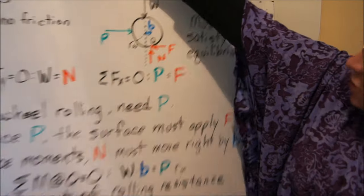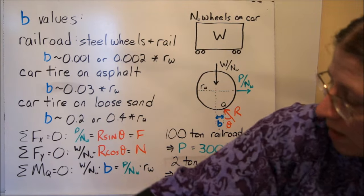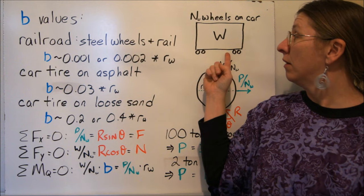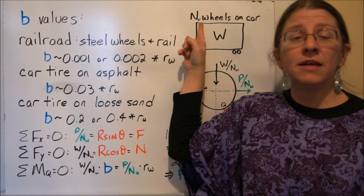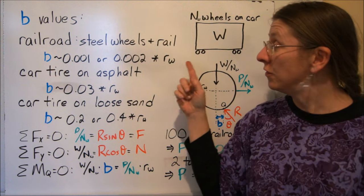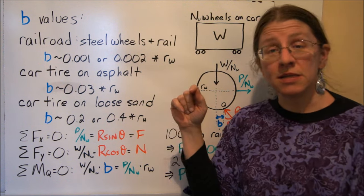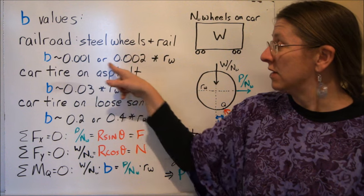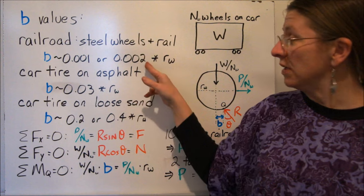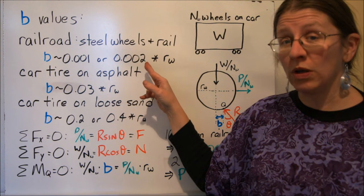So what do these numbers actually look like? If you're talking about a railroad car, so here's my railroad car. I'm going to have NW number of wheels. So on a railroad car you might have eight wheels. If it's a steel wheel and it's a steel rail, you're talking about a B that's on the order of 0.001 times the radius of the wheel. So these are very tiny rolling friction.